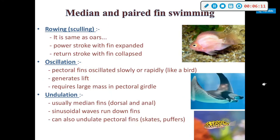Median and paired fin swimming includes rowing, sculling, and rolling — the same concept as oars. There is a power stroke with the fin expanded and a return stroke with the fin collapsed. Oscillation involves pectoral fins oscillated slowly or rapidly like a bird — flap, flap — which generates lift and requires large mass in the pectoral girdle. Undulation typically involves median fins — dorsal and anal — where sinusoidal waves run down the fins; pectoral fins can also undulate.